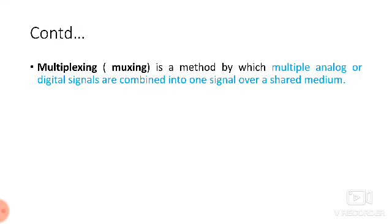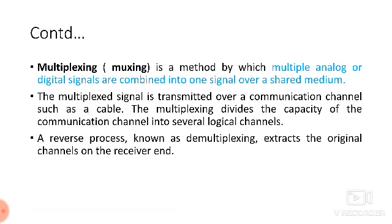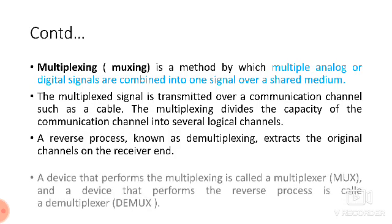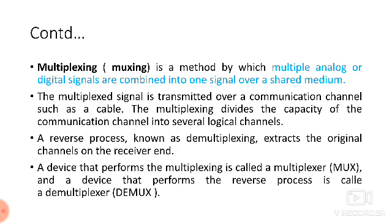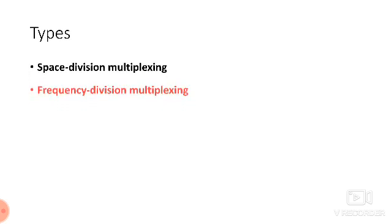The multiplexer, or MUX, is the method by which multiple analog signals are combined into one single channel. Each channel is passed through a low pass filter, and the outputs of the low pass filters are connected to a rotating sampling switch. This switch rotates and selects each channel to be shared in turn.